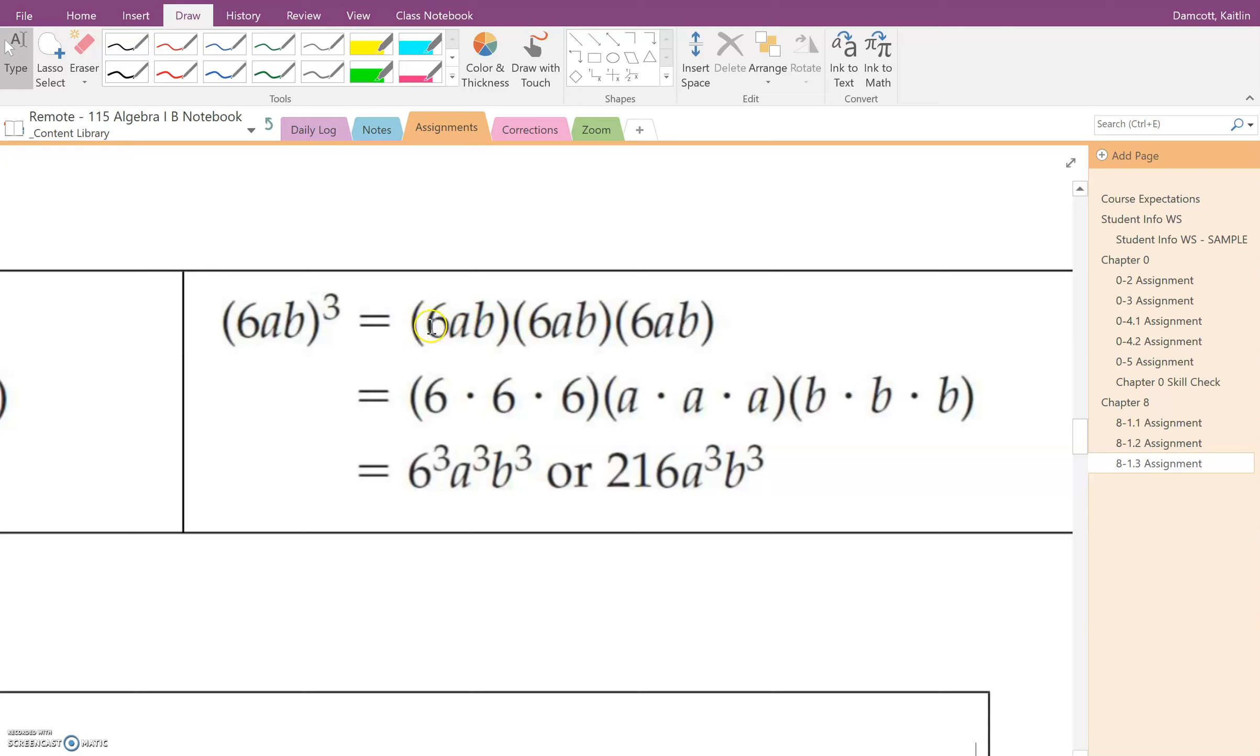We made sure that all of the numbers go together, all of the A's go together, all of the B's go together. So we've got 6 times 6 times 6, all of the 6's are together. A times A times A, all of the A's are together. And then B times B times B, all of the B's are together.